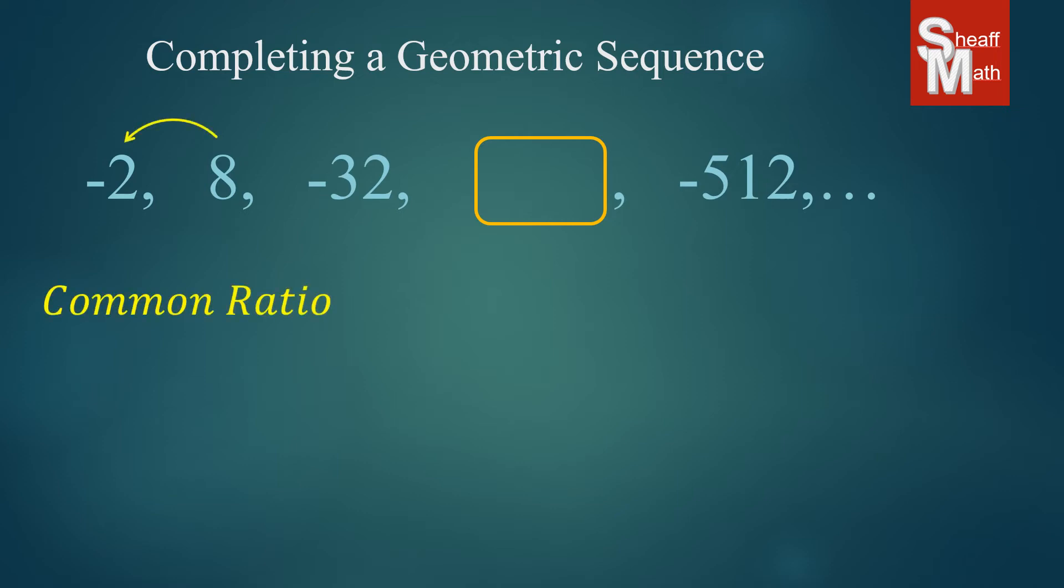We'll take 8 and divide it by negative 2. I always like to take the lowest numbers, the easiest ones. And 8 divided by negative 2 equals negative 4. So this is the number that multiplies each time. And you can tell that it's a negative number because they go back and forth from negatives and positives. So when I take negative 32 and I multiply it by negative 4, I get a positive 128. Again, it's the same process each time.